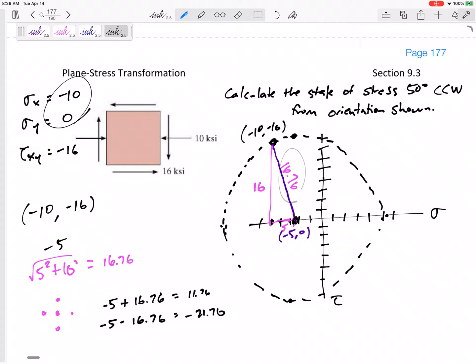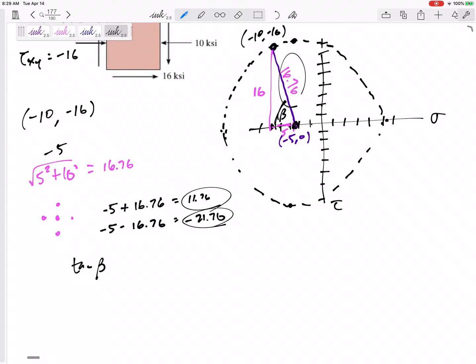These are my principal stresses, but it wants to know the state of stress 50 degrees counterclockwise. I need to rotate this line 100 degrees counterclockwise. Remember, 1 degree real life equals 2 degrees on Mohr's circle. Let me find this angle I'm calling beta. Tangent is opposite over adjacent, 16 over 5. Beta is 72.6 degrees.